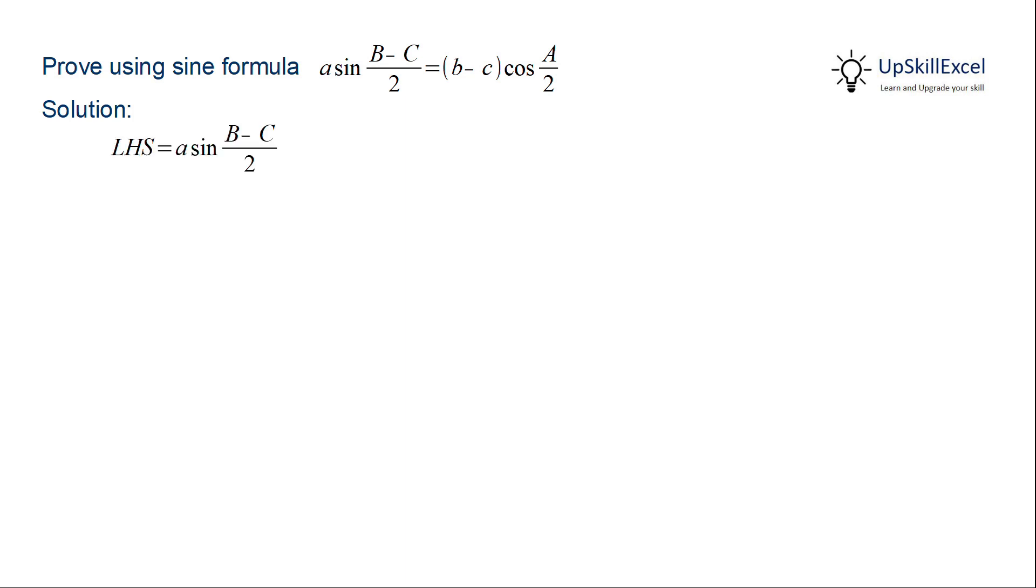We start with the left-hand side. From the sine formula, replace a by k sin A. Further, apply the sin 2θ formula on sin A and replace it by 2 sin(A/2) cos(A/2).